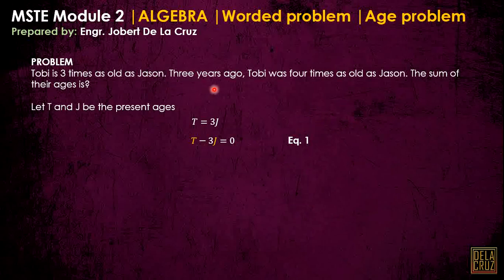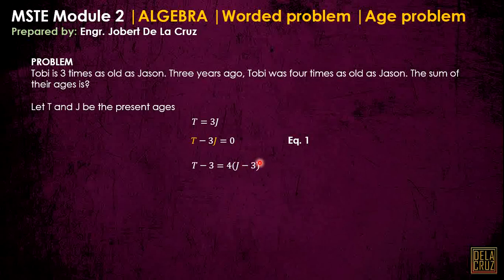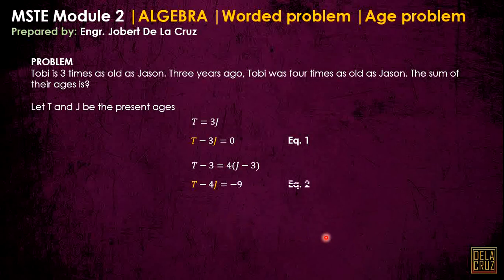Again, three years ago, the age of Toby will be T minus 3 — that is the present age minus three years. The age of JSON three years ago is also J minus 3. It simply says that three years ago, this age of Toby is four times the age of JSON. We can rearrange this and it gives us equation two.